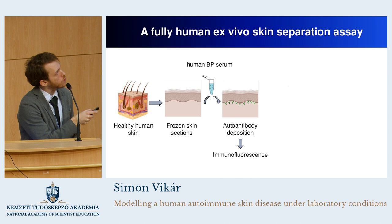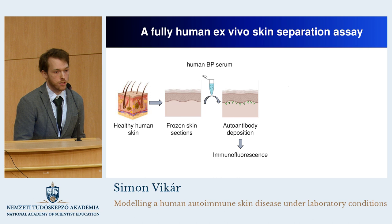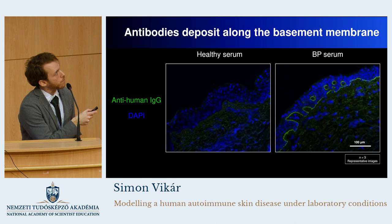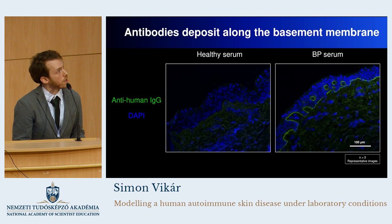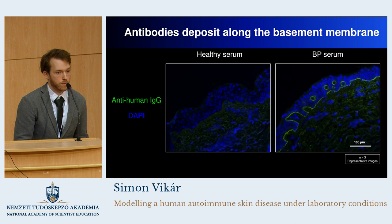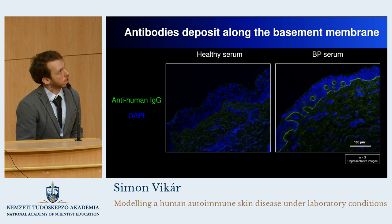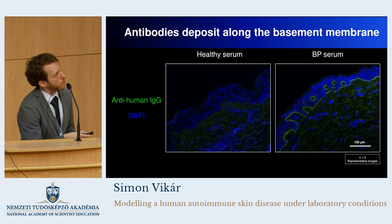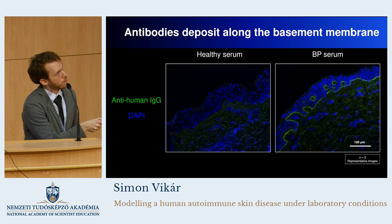At first, we examined if the autoantibodies form depositions on our tissues as well, as in the disease. I showed you a control experiment where we treated the tissue with a control serum from a healthy individual. The blue staining shows the cell nuclei in the epidermis, and the green color shows the specific signal of autoantibody deposition — and here there are no specific signals at all. But when we treated the tissues with the bullous pemphigoid serum, the differences can immediately be seen: there is a really strong linear deposition of autoantibodies between the epidermis and the dermis. So we managed to show the antibody deposition on the skin tissues.